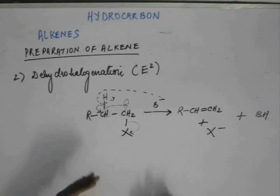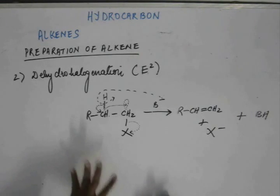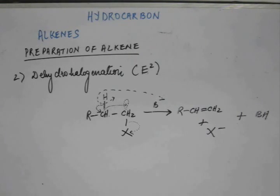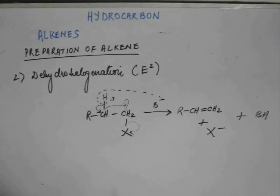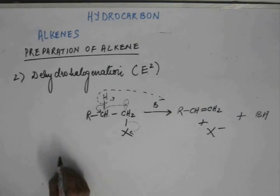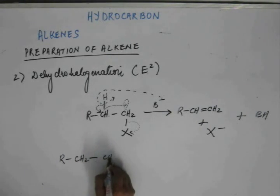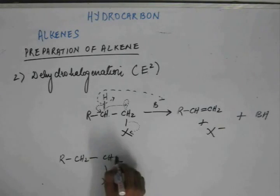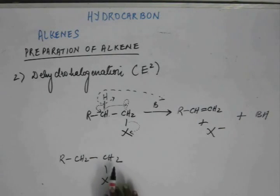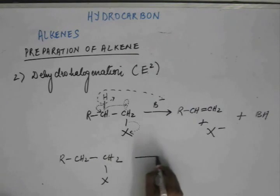In general, this is E2, and in particular this reaction is called dehydrohalogenation, and the product is alkene. Now, the first thing to discuss is why this particular hydrogen has been abstracted by the base and not other hydrogens. Let's see what happens when the other hydrogen is abstracted.